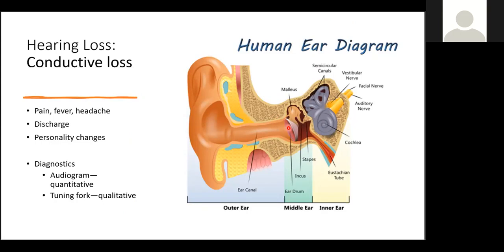Conductive hearing loss occurs when there's a problem transferring sound waves anywhere along the pathway through the outer ear, the tympanic membrane, or the middle ear, which are our ossicles. Some causes of this conductive hearing loss could be infections of the ear, any inflammation, foreign bodies, trauma, or even accumulation of earwax.